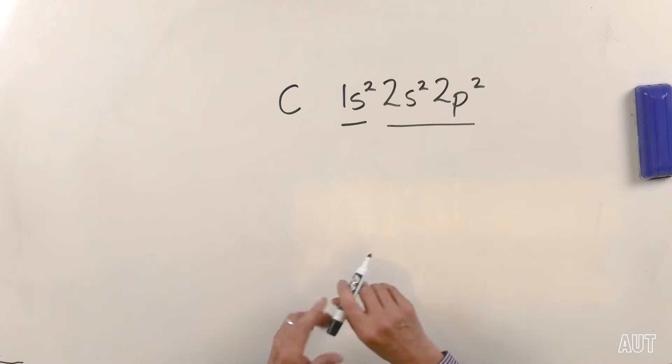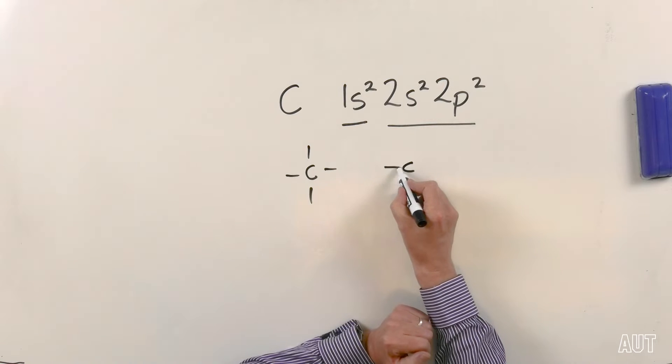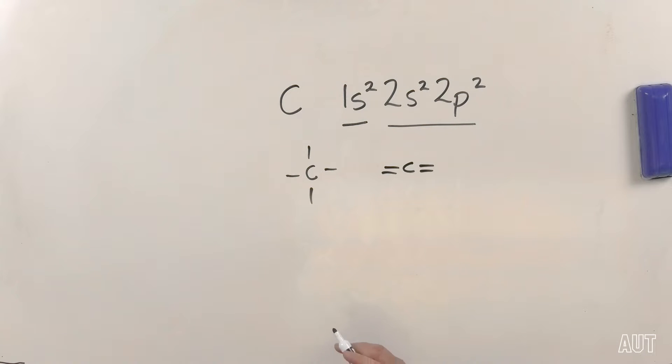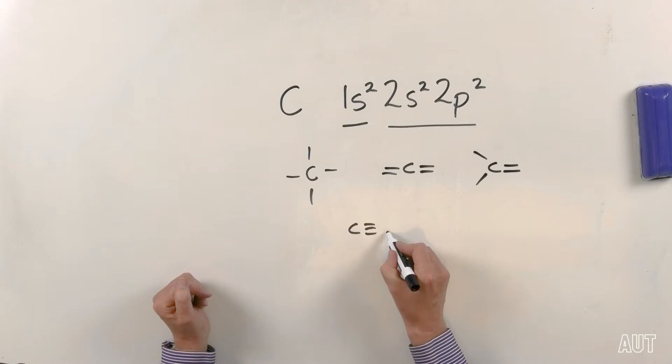Those four bonds can be any combination of, let's say, four single bonds. You could have a carbon with two double bonds. You could have a carbon with a double bond and two singles - that makes four. You could have a carbon with a triple bond and a single. So those are the four possibilities in terms of carbon forming four bonds. Carbon can form single, double, and triple bonds. It is pretty much invariant in that you count up the number of bonds around a carbon atom in pretty much any organic compound and it's going to be four.